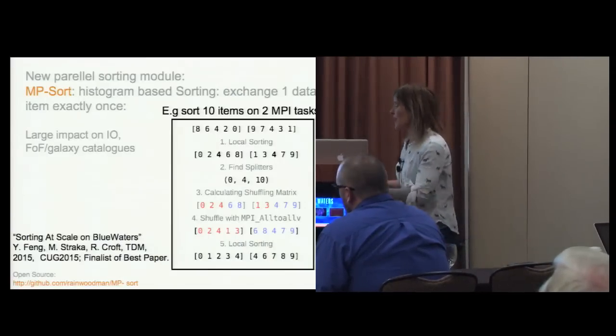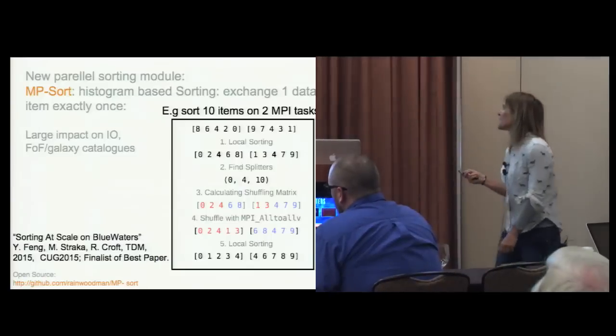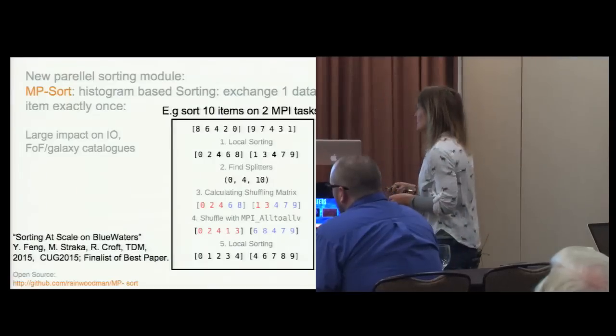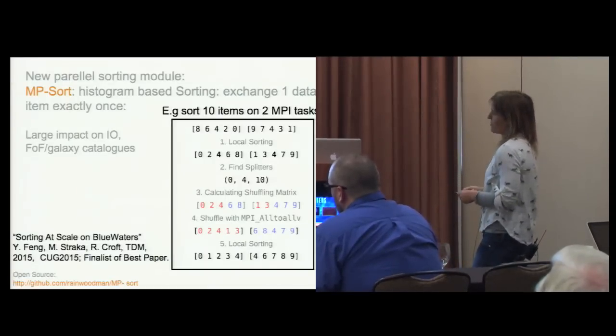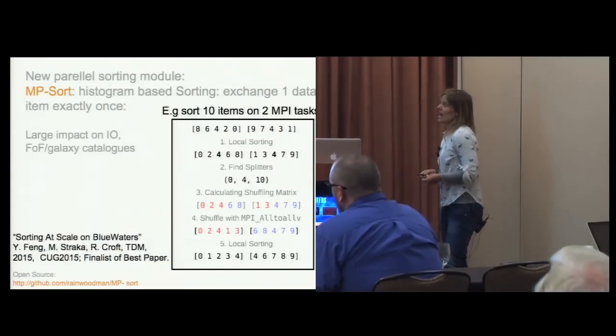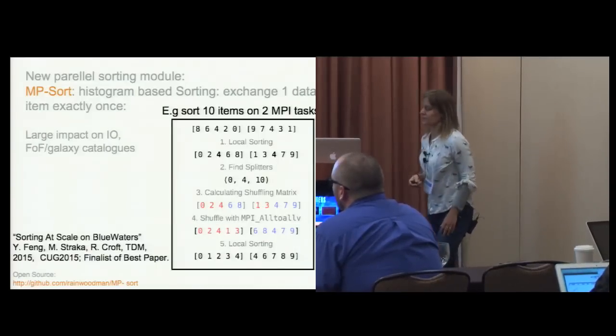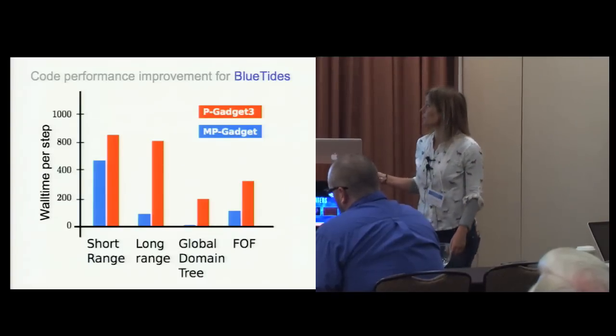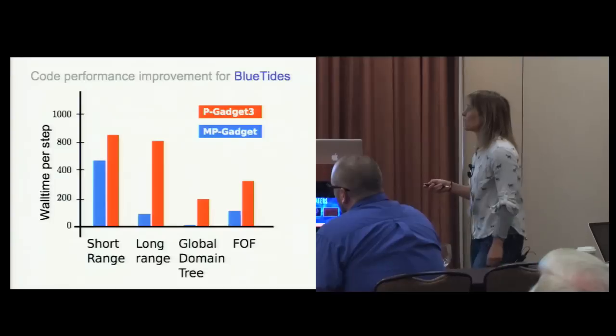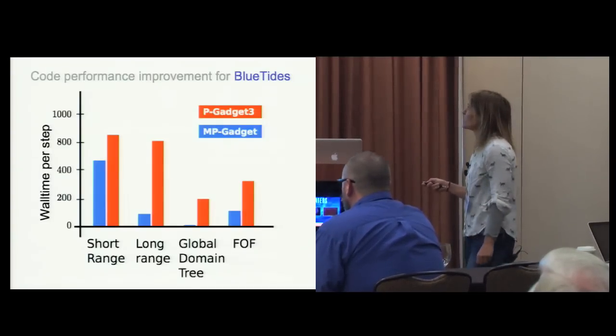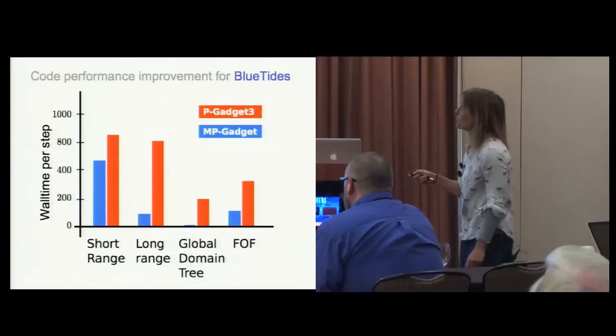Communication at this very large number of cores becomes a really big deal. There's also a new BigFile algorithm that was worked on, and this impacts a lot of the I/O, the way we write out and store the data. Yu Fang, Mark Struccker, and CSA got a paper accepted at the Cray User Group conference about this.